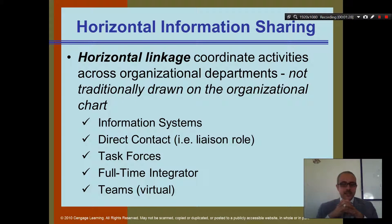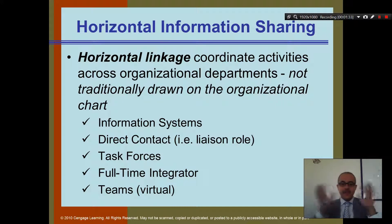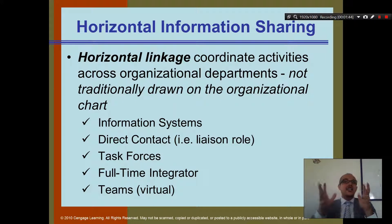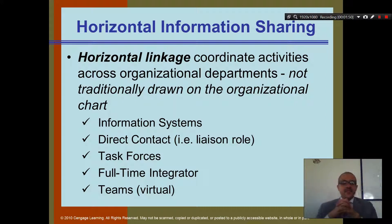Direct contact and also liaison role. Liaison role is when you have someone in the middle that connects between different departments. Task force is when you have a group of people with a mission — for example, to find the best advertisement for the company. That would be a task force. Full-time integrators are people who do integration. And then teams, whether virtual or face-to-face.